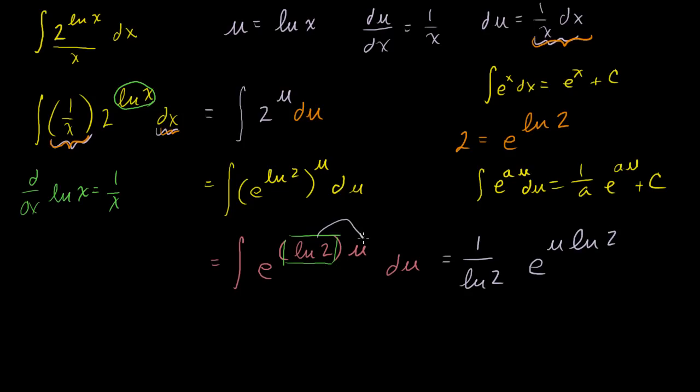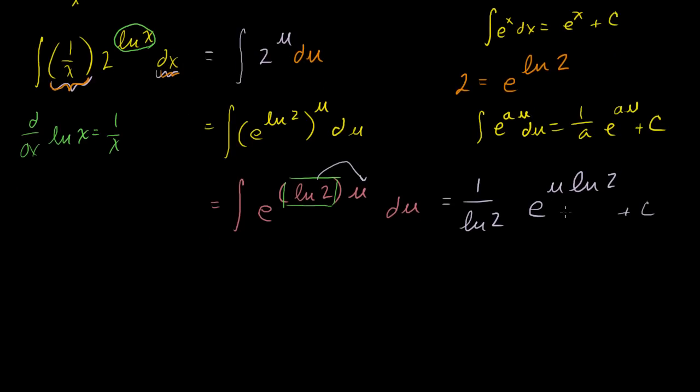So it's e to the u times the natural log of 2. Right, all I did is I swapped this order. I could have written this as e to the natural log of 2 times u. This is an a. a times u is the same thing as u times a. Plus c. So this is our answer, but we have to kind of reverse substitute before we can feel satisfied.